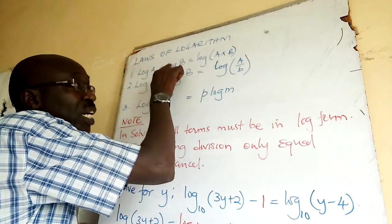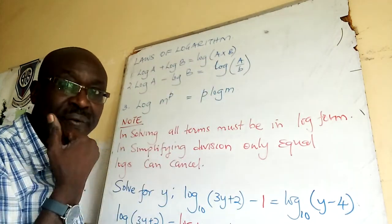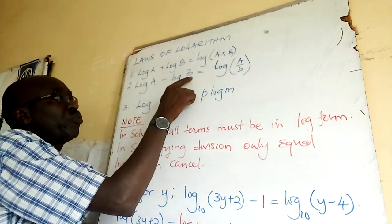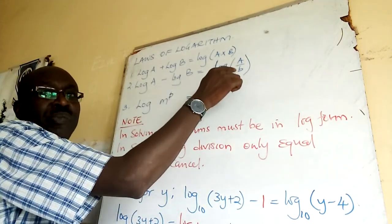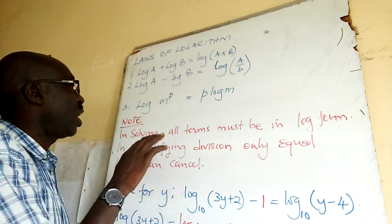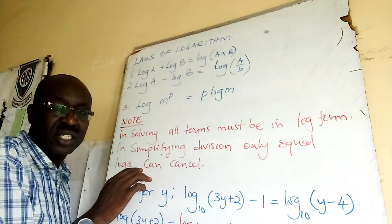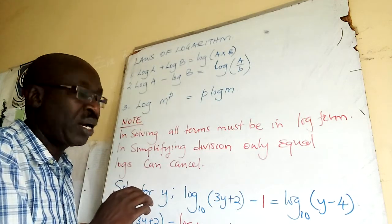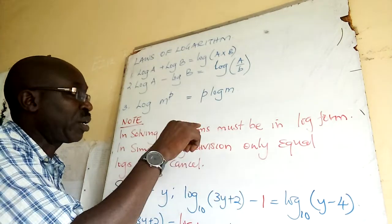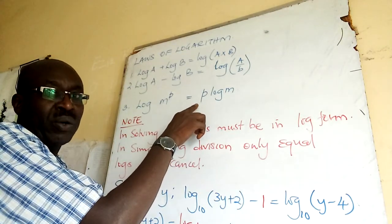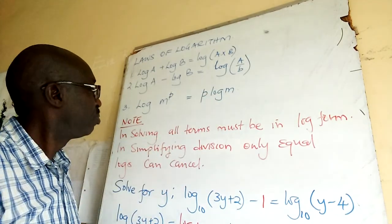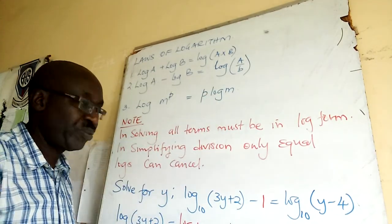This is basically an expansion of that. If I have log a minus log b, then a and b, those figures, are divided. And when we have an index p of a number m, it can be dropped down as a coefficient of log m. Note, very important.